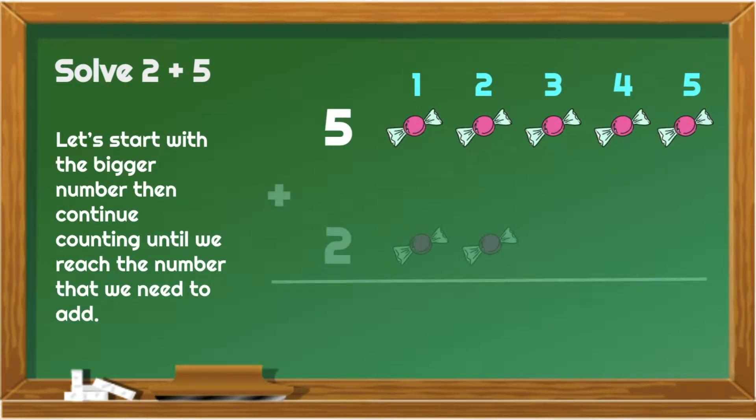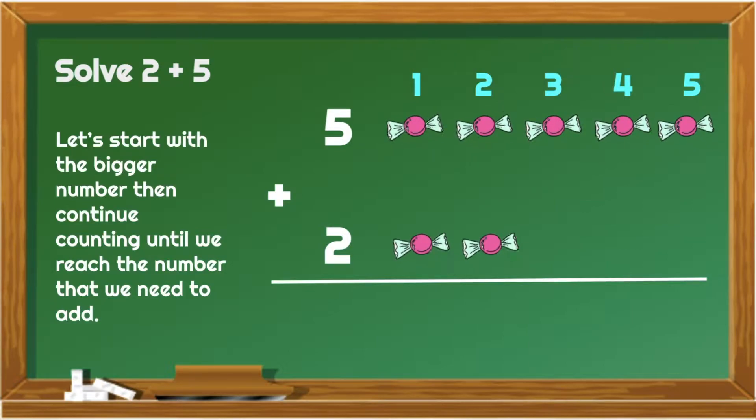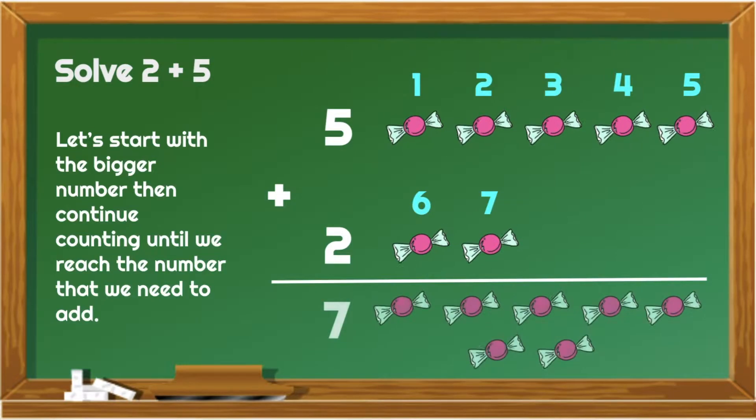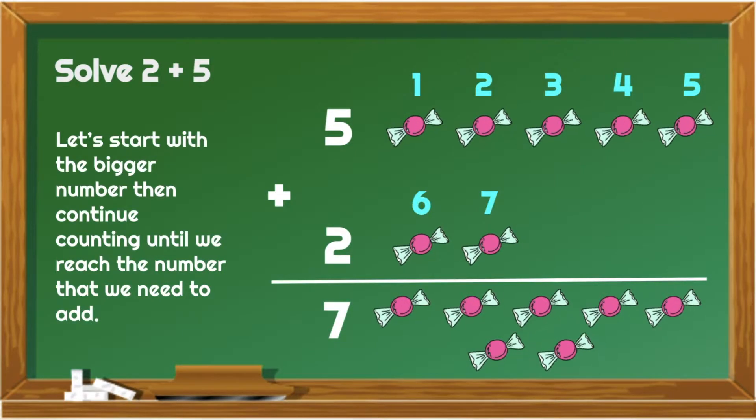We have already 5 candies, and we just have to add 2 more candies. So, from 5, let's just count 2 more. 6, 7. 5 candies plus 2 candies is equal to 7 candies.